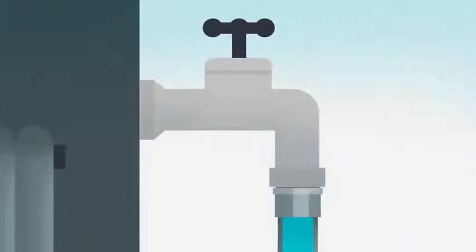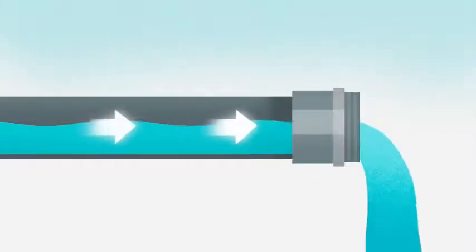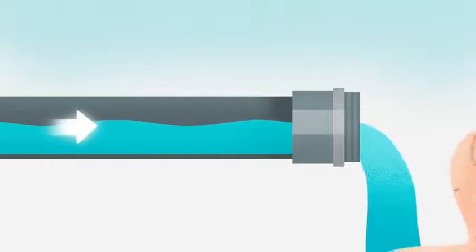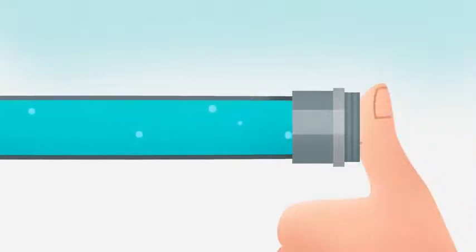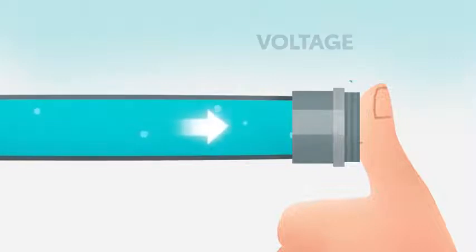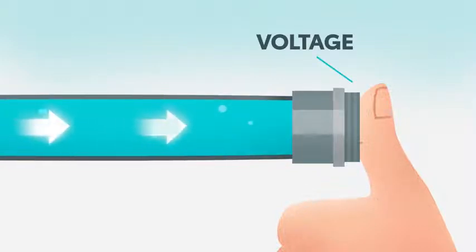First, volts. Imagine water flowing through a garden hose. This behavior is actually very similar to electricity flowing along a wire. Now, say you block the end of this hose with your thumb. In electrical terms, the force of the water pressure now pushing against your thumb is voltage, which is measured in volts. The higher the voltage, the more push the electricity has.